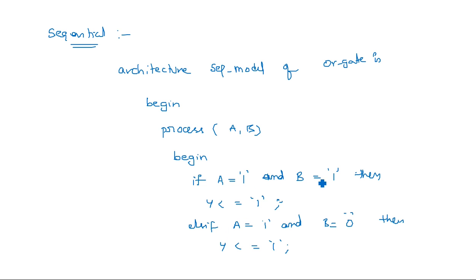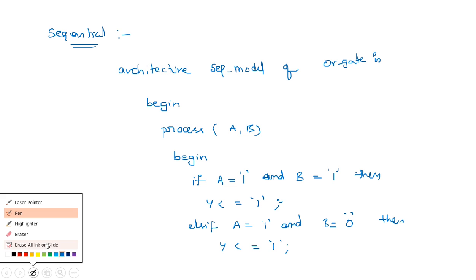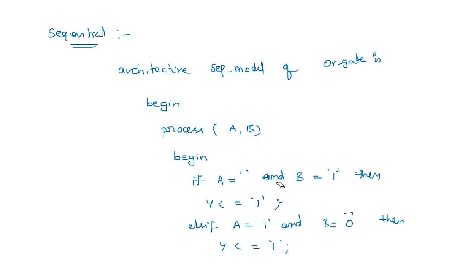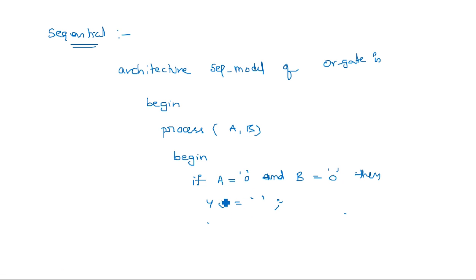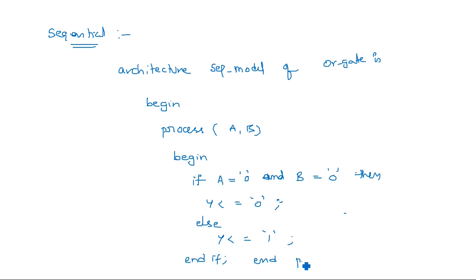You can also simply write: if A equals 0 and B equals 0 then Y equals 0, else Y equals 1. In the remaining all cases you have Y equal to 1, except when A equals 0 and B equals 0. Then end if, end process, and end architecture name which is sequential_model. So here we need to add the process statement and then if-else or conditional statements depending upon the type of code, and then we end all the opened blocks — if statement, process statement, and then architecture name.